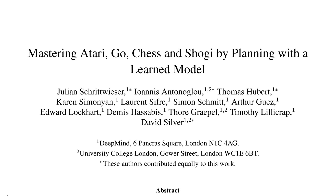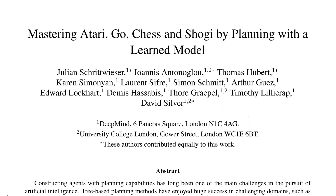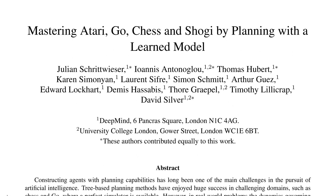Hi there, today we're looking at 'Mastering Atari, Go, Chess and Shogi by Planning with a Learned Model' by Julian Schrittwieser and others generally from DeepMind. This paper is an extension to AlphaZero, the famous algorithm.